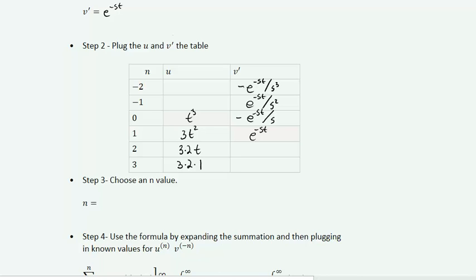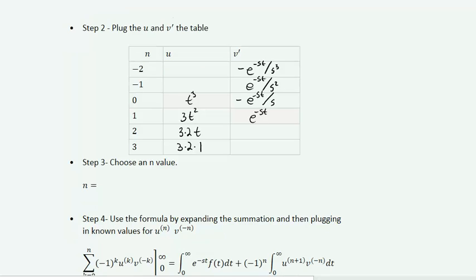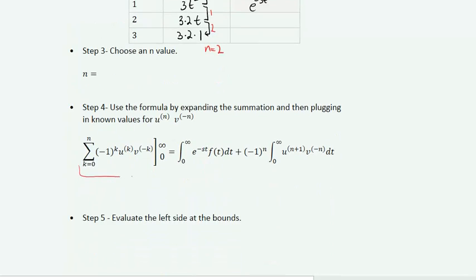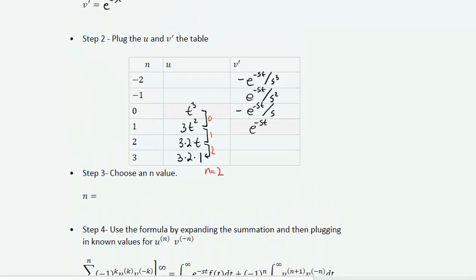For any polynomial term, we take the number of steps required to reach a constant: step 0, step 1, and step 2. So we could take n=2 and get 3 terms, or we can use a different way that only requires step 0.